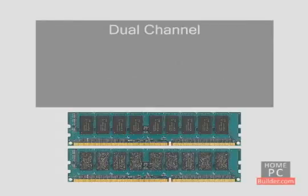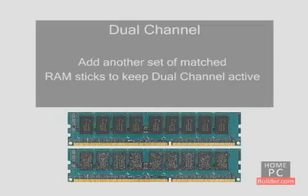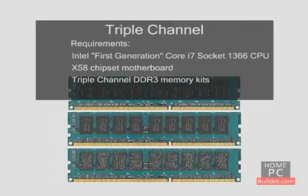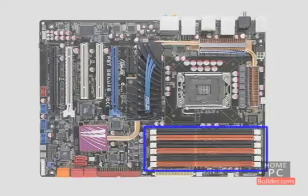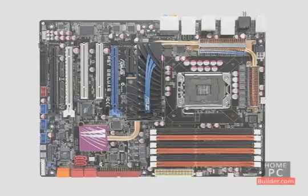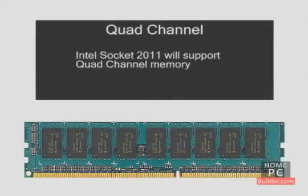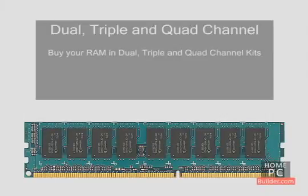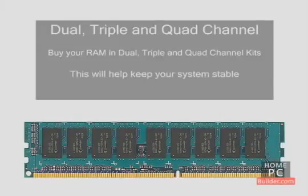If you want to add more memory in the future, you can add another set of matched memory sticks to keep dual-channel active. Intel's Socket 1366 first-generation Core i7 CPUs and motherboards can use triple-channel DDR3 memory kits. These motherboards have six RAM slots, so you can install three RAM sticks and still have three more slots available while keeping triple-channel enabled. Intel will also release a new Socket 2011 that supports quad-channel DDR3 memory. To ensure RAM sticks are well matched, it's best to buy kits that say they support dual, triple, or quad-channel configurations, which ensures the RAM is stable and won't cause errors or crashes.